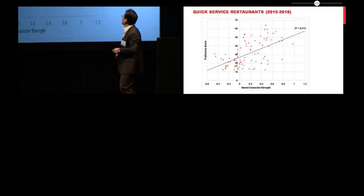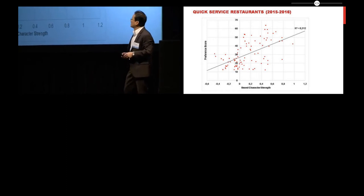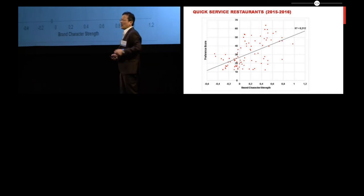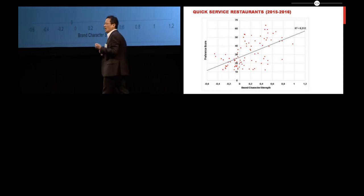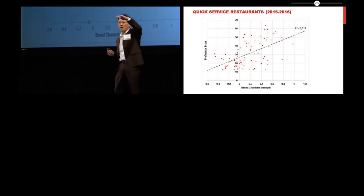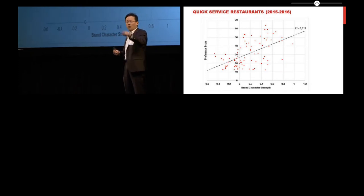This is in the context of quick service restaurants. Strong relationship, strong prediction of how much people like a brand. It's not perfect, of course, but the more brand character you have, the higher your bars are in that industry, the more consumers will like your brand relative to other brands in that industry.